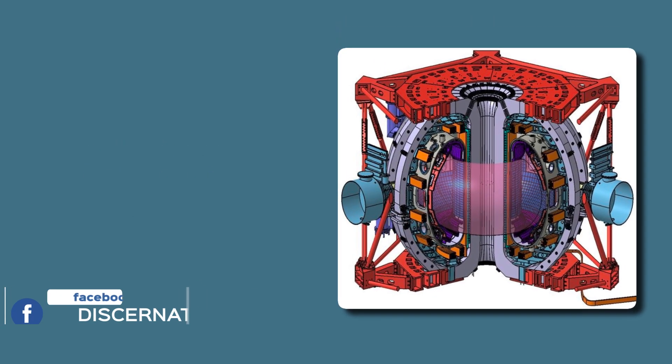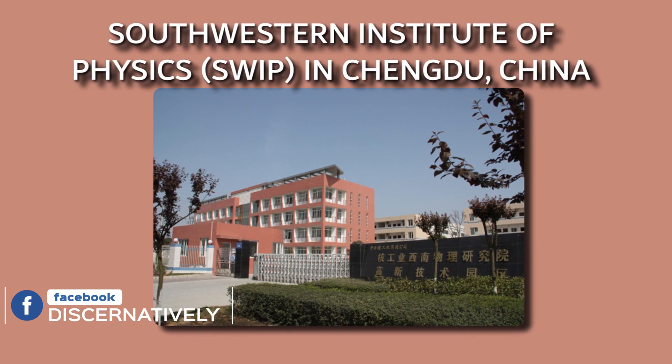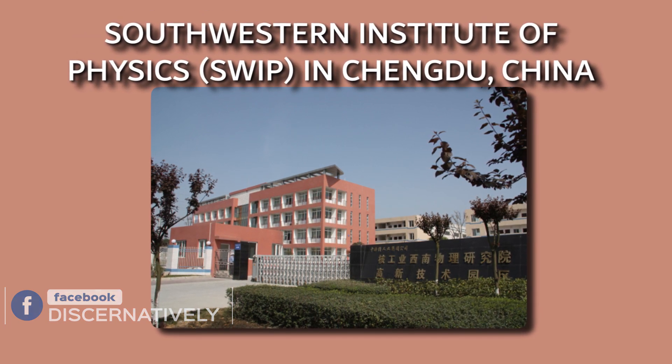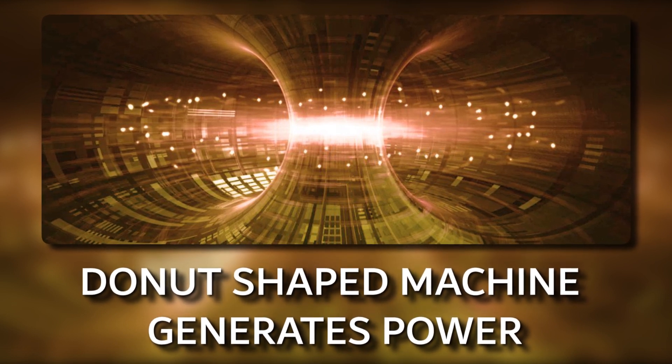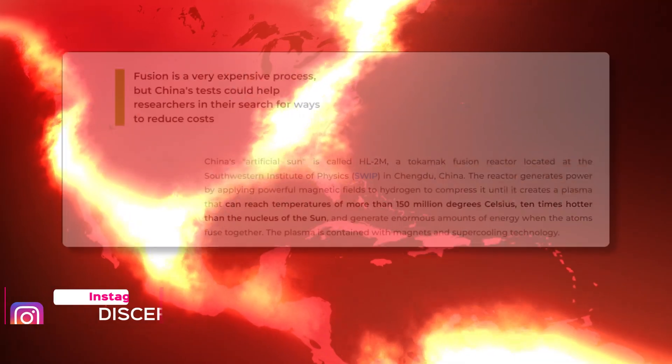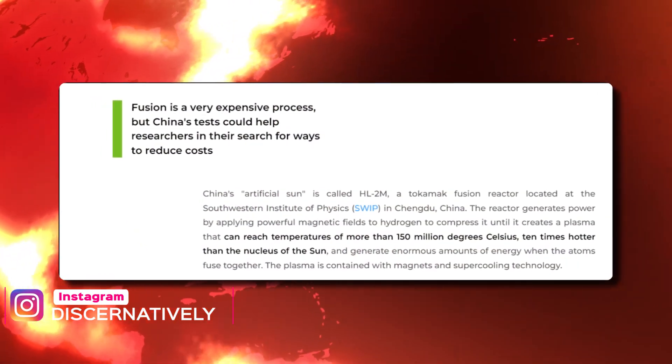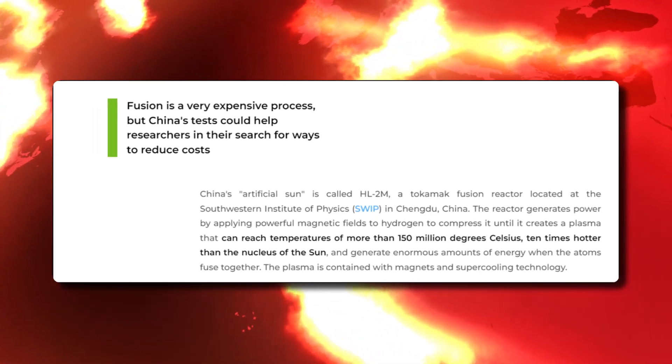HL2M is China's very own artificial sun, and it is a fusion reactor located at the Southwestern Institute of Physics, SWIP, in Chengdu, China. This donut-shaped machine generates power by using magnetic fields to compress hydrogen until it creates a plasma that's hotter than hot. We're talking about temperatures of more than 150 million degrees Celsius, which is many times hotter than the core of the sun.